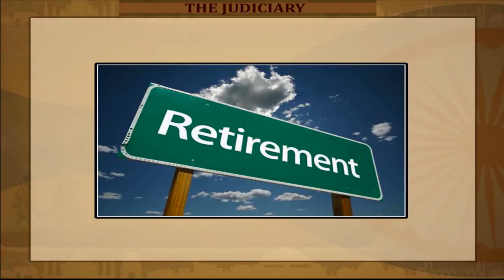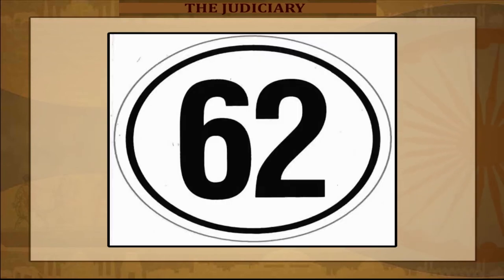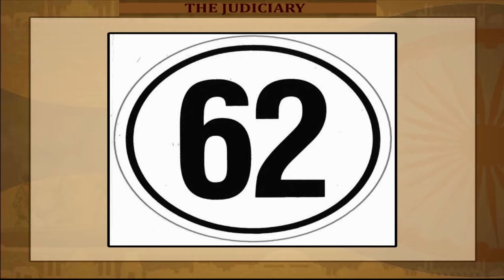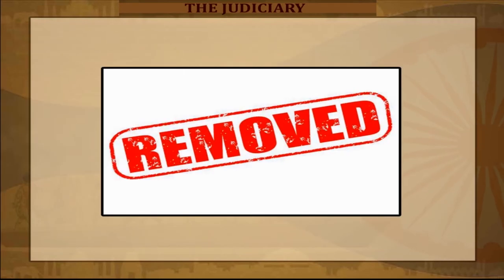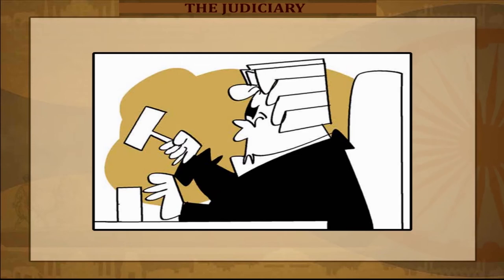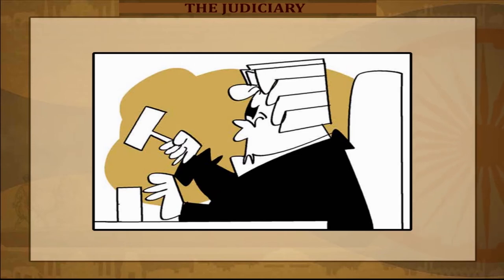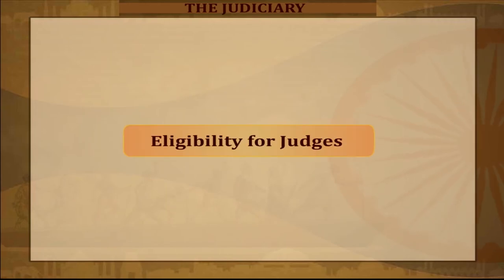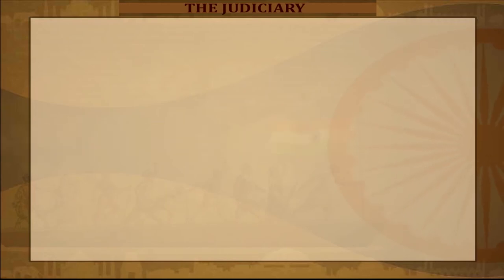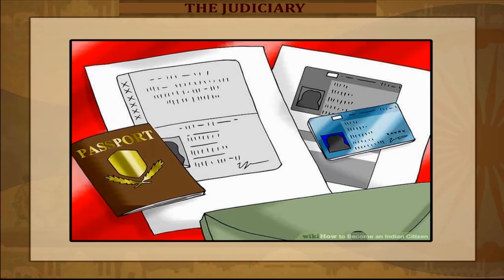Term and removal: judges of the High Court retire on attaining the age of 62 years and can be relieved earlier from their post on resigning. The process of removal of a judge of the High Court from his or her position is the same as that for a judge of the Supreme Court.